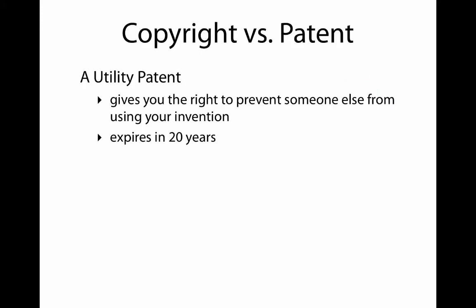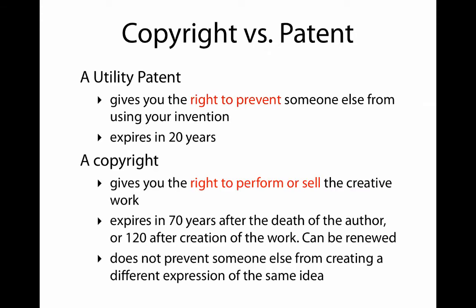A quick reminder: a utility patent gives you the right to prevent someone else from using your invention, and it expires in 20 years. A copyright gives you the right to perform or sell — in other words, it allows you, whereas patents prevent somebody else. The lifetime of a copyright is currently 70 years after the death of the author, or 120 years after the creation of the work, and it can be extended. Patents expire in 20 years, period.